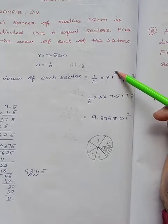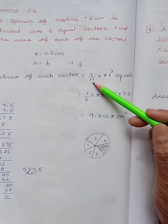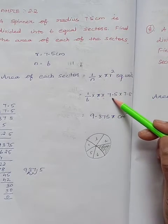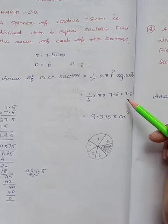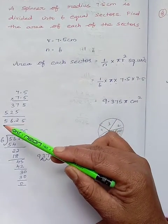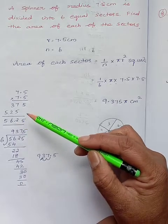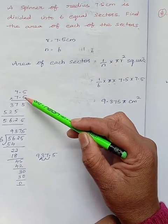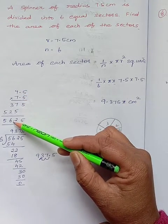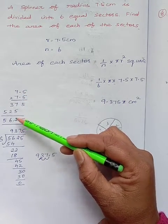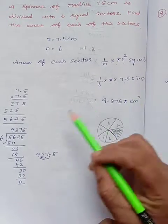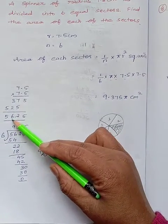Since area is given, we will write pi r square square units. In the place of n, we write 6 into pi into radius value 7.5 into 7.5. Now, 7.5 into 7.5 is 5625. The decimal point is before one number and before one number, so totally before two numbers. Therefore 7.5 into 7.5 is 56.25.